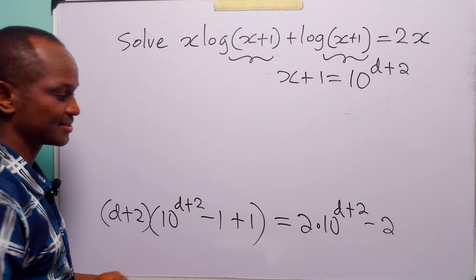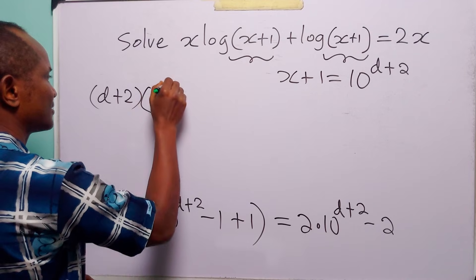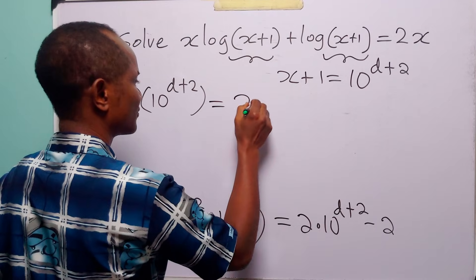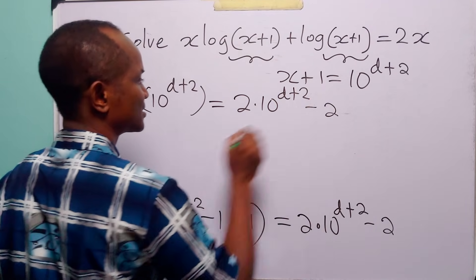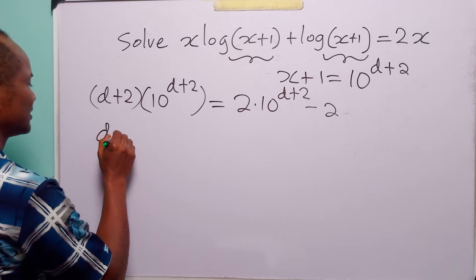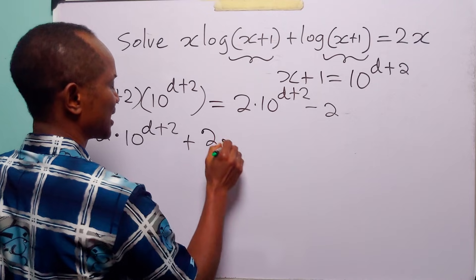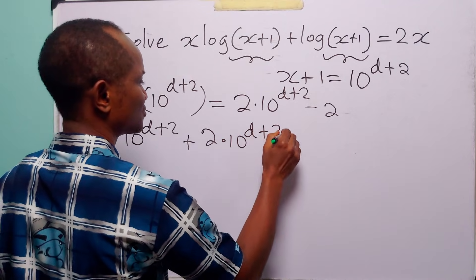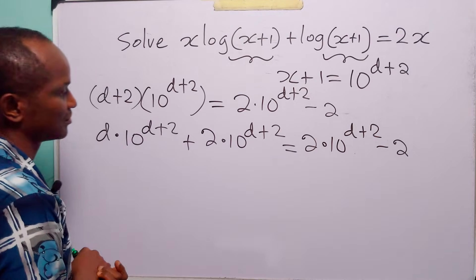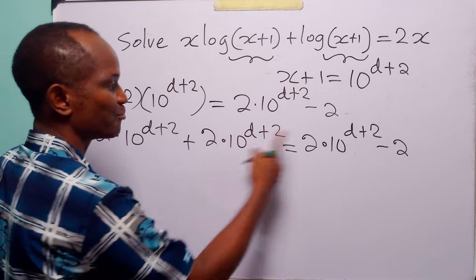Minus 1 plus 1 is 0, so on the left-hand side we have d plus 2 times 10 to the power d plus 2, minus 2. When we open this bracket, we have d times 10 to the power d plus 2, plus 2 times 10 to the power d plus 2, and this is equal to 2 times 10 to the power d plus 2 minus 2.